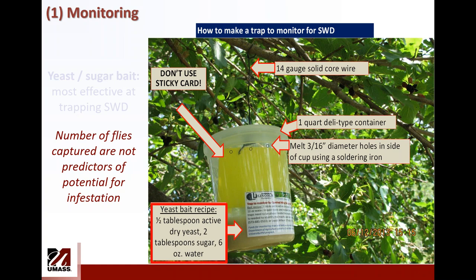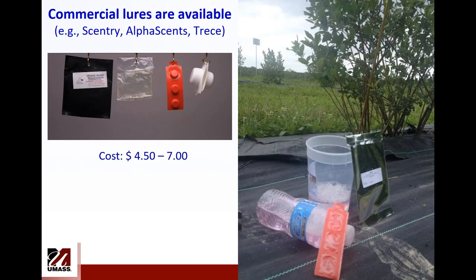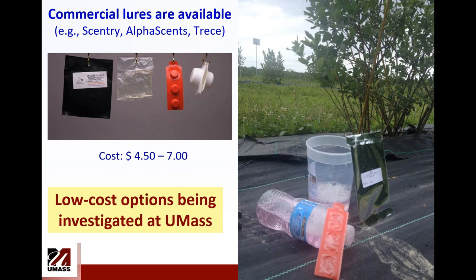When your crop is susceptible — changing color — and your traps capture spotted wing drosophila, then it will be time to spray. Monitoring is more about presence and absence of spotted wing drosophila; it's not really going to predict injury. A number of companies have developed lures you can buy for monitoring. Examples include AlphaSense, the Trecel lure, and the Sentry lure. In my opinion, those are not cheap, so in my lab I am investigating cheaper and effective options.